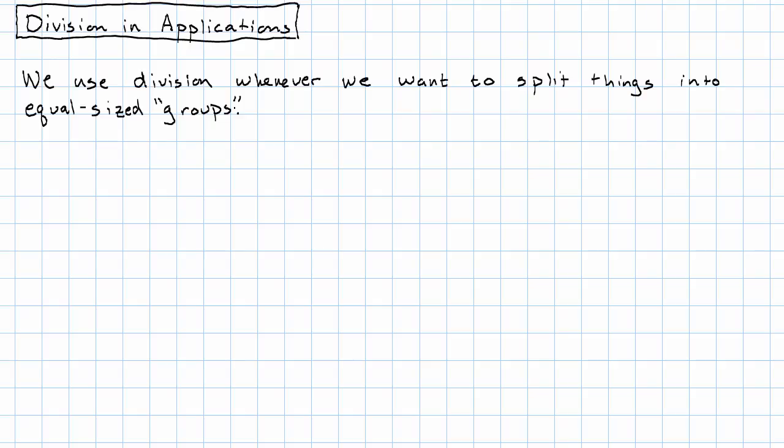So what are some examples? Maybe we're putting objects into containers of a given size. What does that mean? Let me be more specific.